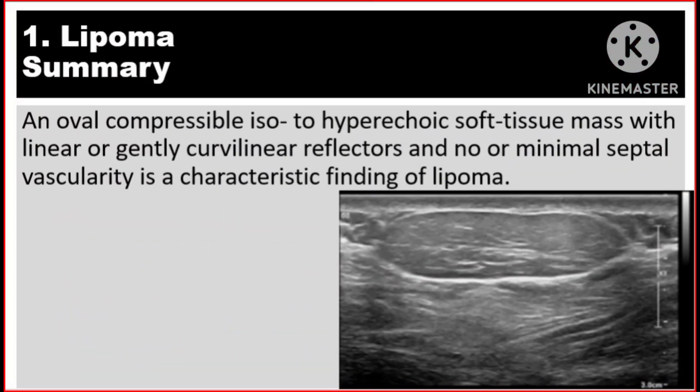Summary. An oval, compressible, iso- to hyper-echoic soft tissue mass with linear or gently curvilinear reflectors and no or minimal septal vascularity is a characteristic finding of lipoma.